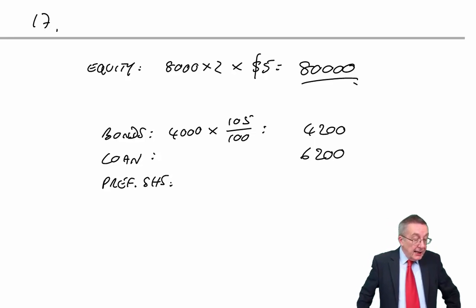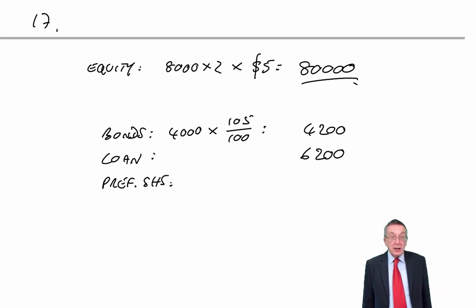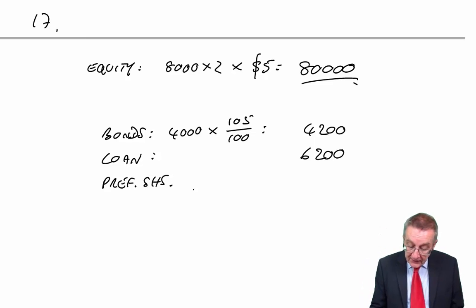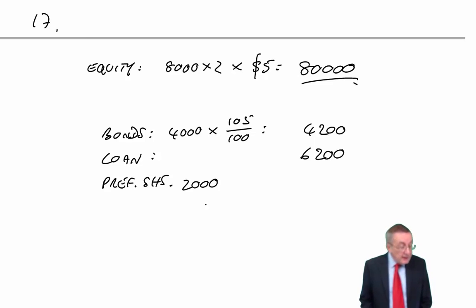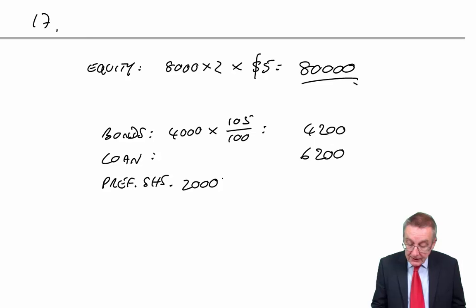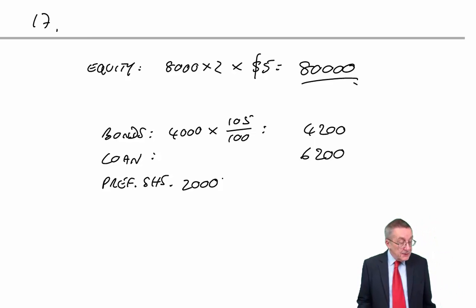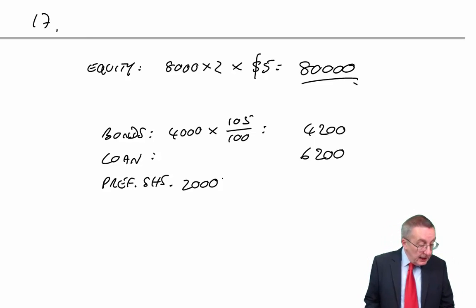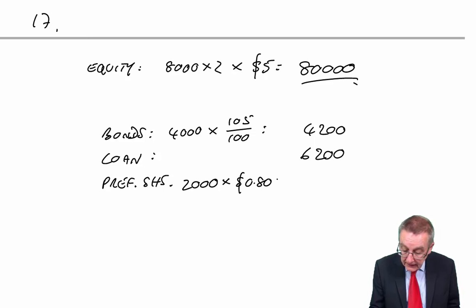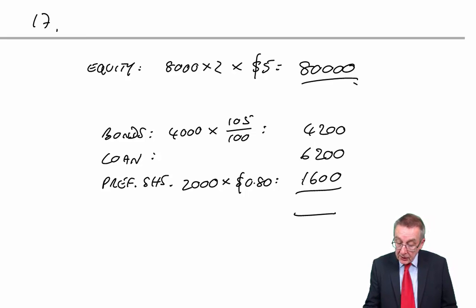What else? Well, our non-current liabilities are prior charge capital. Bonds with 4,000. The nominal value is 100. They're trading at 105. And so the market value, 105 for every 100, which is 4,200. We've also got the bank loan. Bank loans don't have market values. If you've borrowed 6,200, you've borrowed 6,200. And finally, preference shares. Preference shares are treated as non-current liabilities. They are prior charge capital. So they're at 2,000 nominal value. They are dollar shares, so it's 2,000 shares. They're trading at 80 cents. The market value is 80 cents. And so they come to 1,600. The total prior charge capital, 12,000.